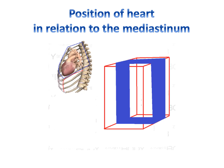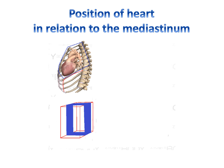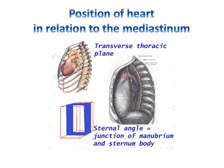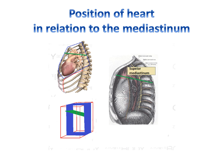The mediastinum can be divided into four regions. The region superior to a transverse thoracic plane, which runs from the sternal angle to the intervertebral disc of T4 to T5, is the superior mediastinum.